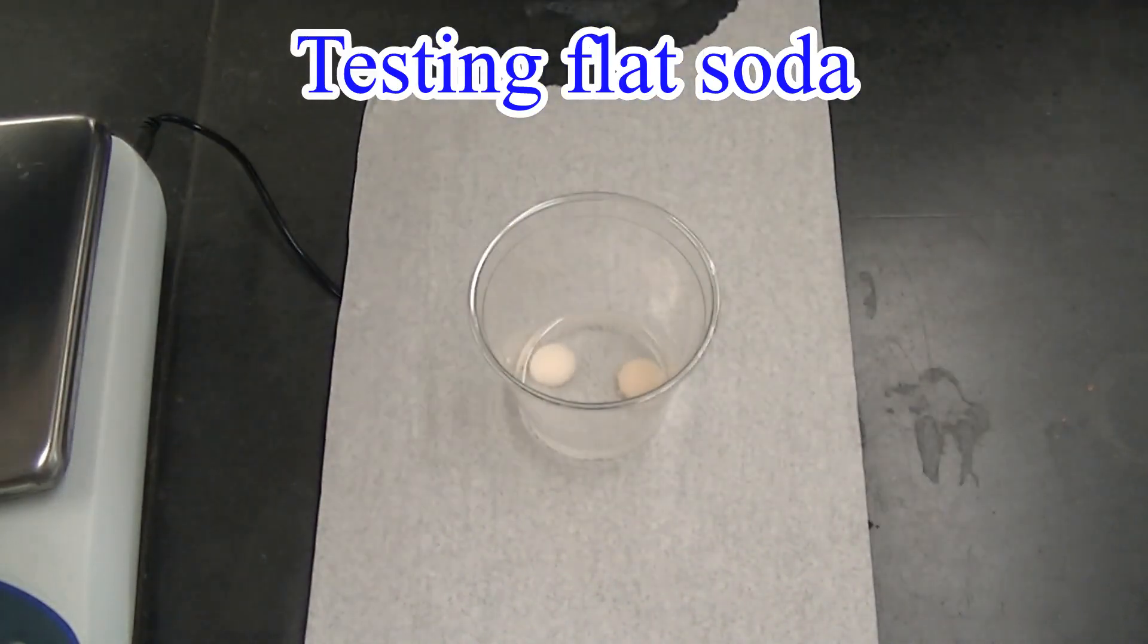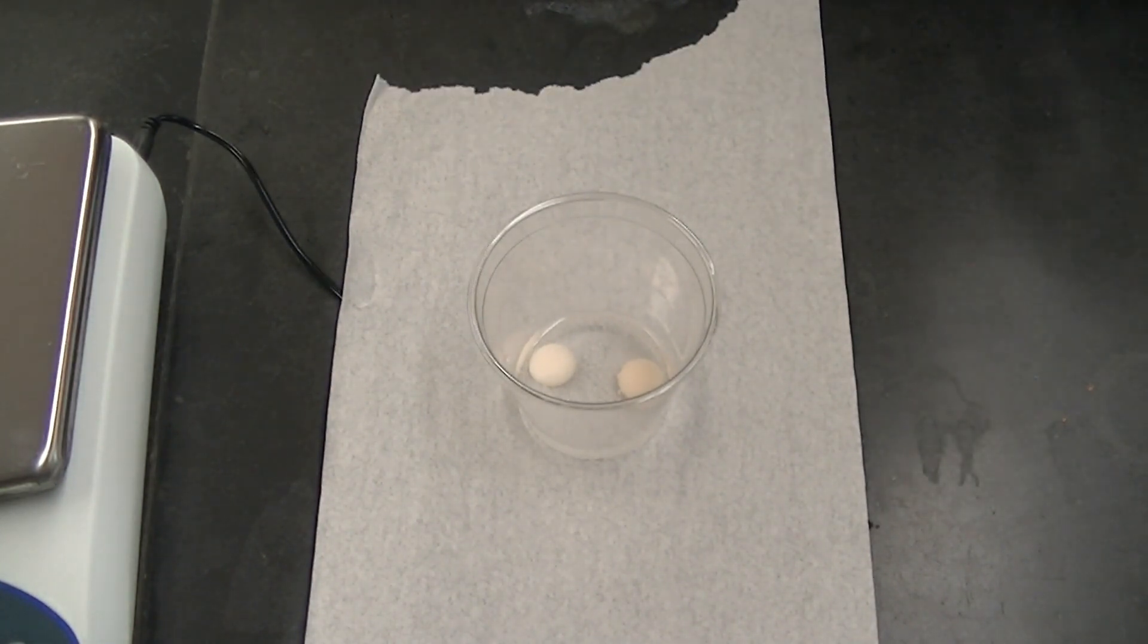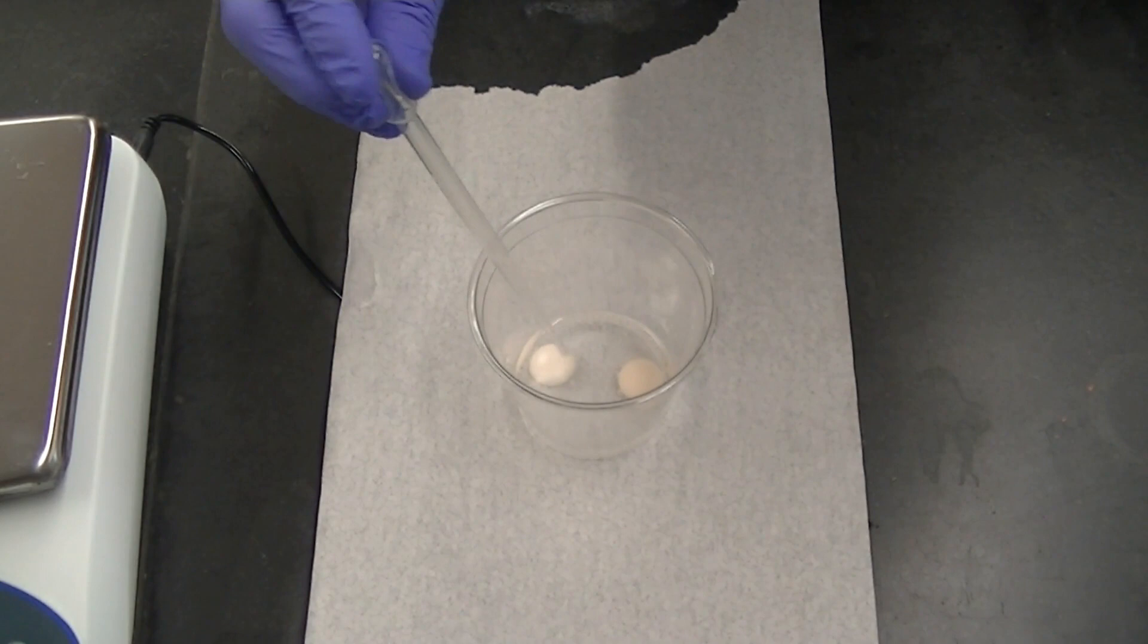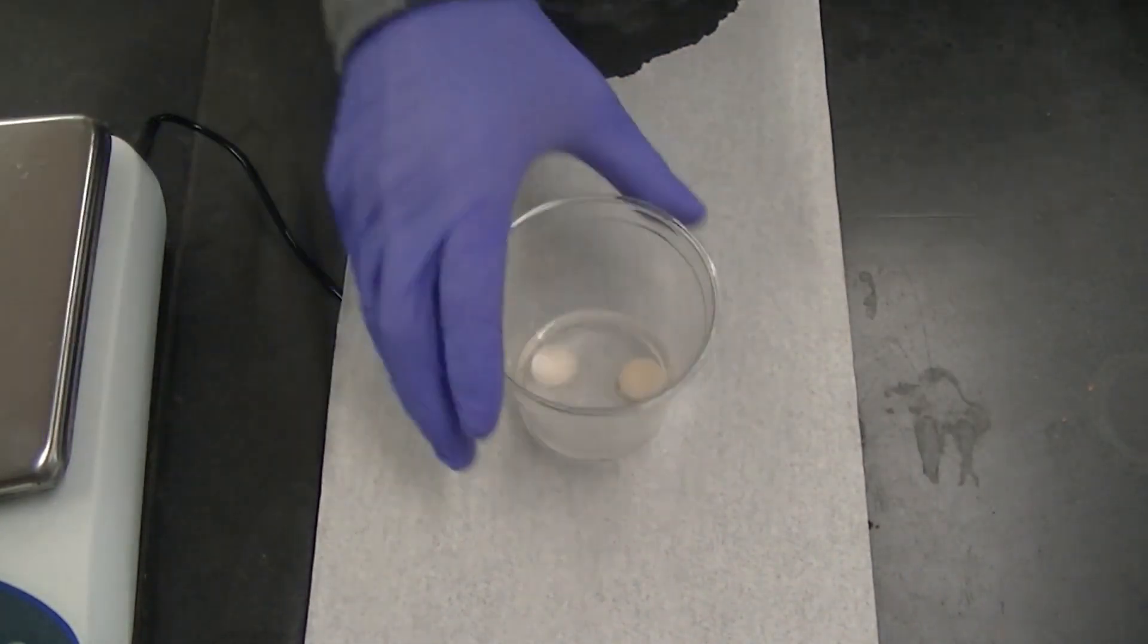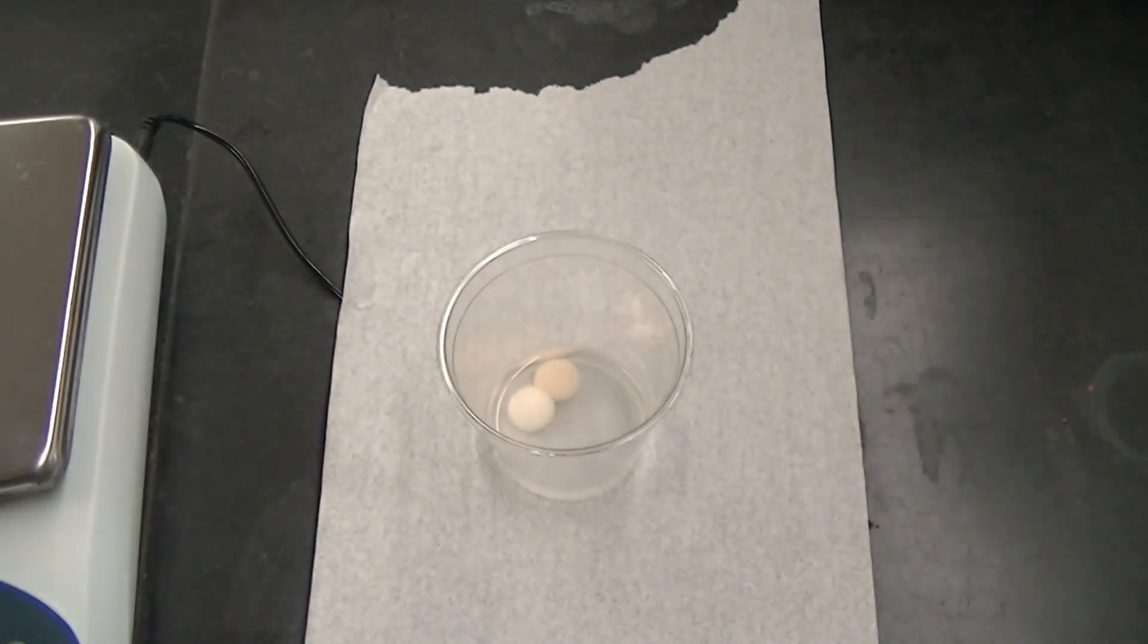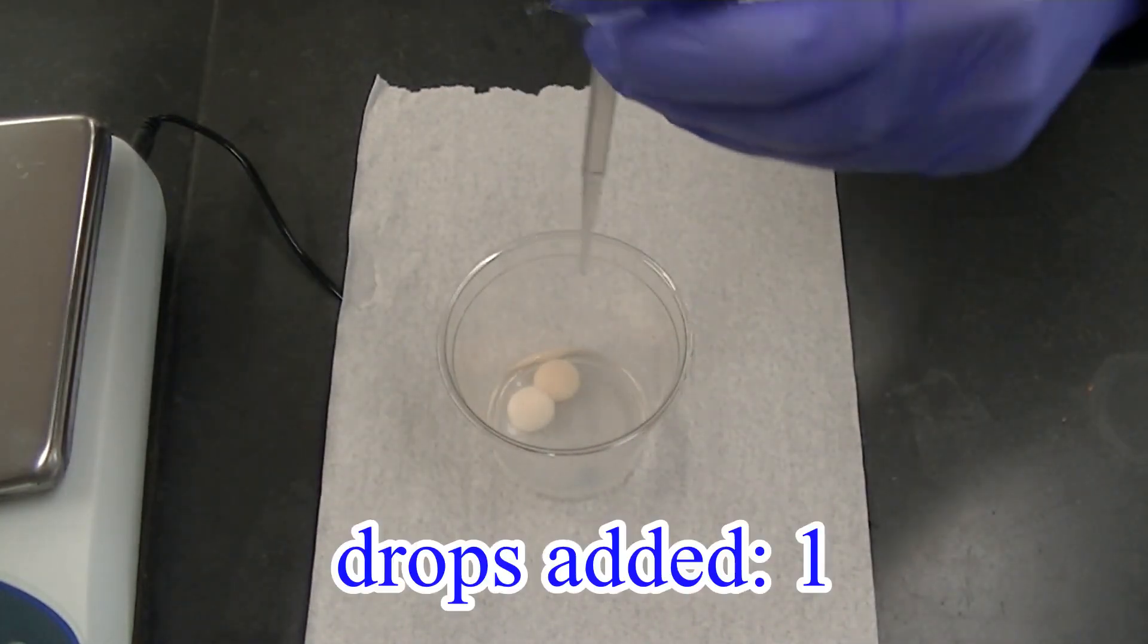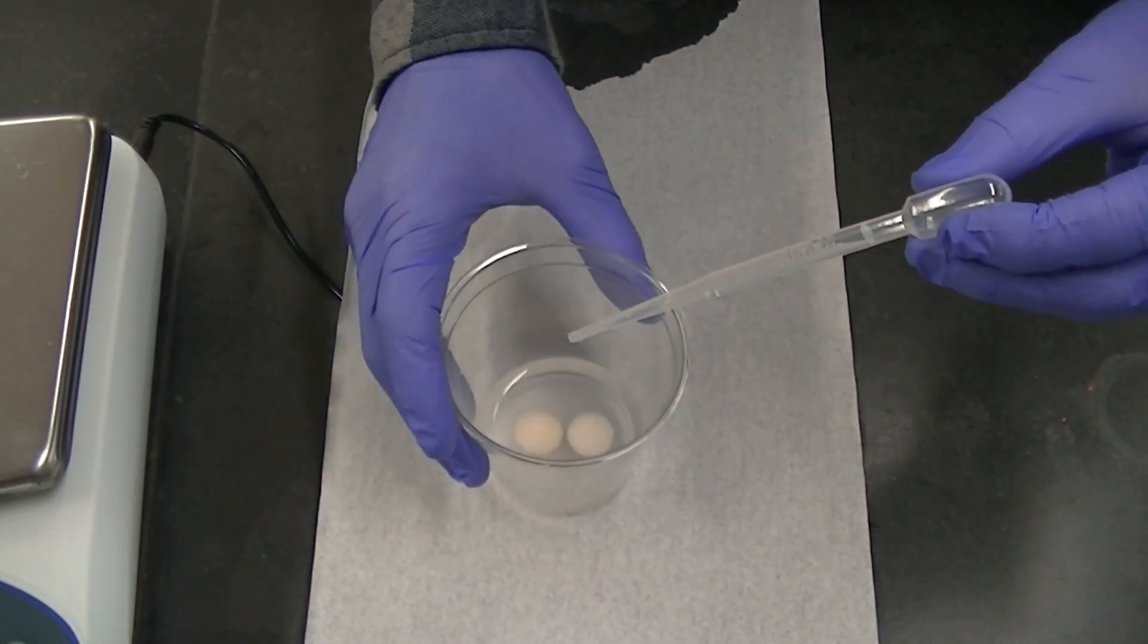Now we'll do the same thing with the soda pop that was degassed with the Mentos candy. Once again I'll add some of the thymolphthalein indicator, colorless in acid and blue in a base. Now we'll repeat the experiment. Here's one drop, two drops.